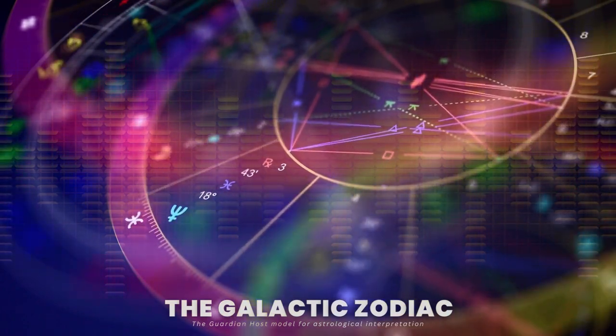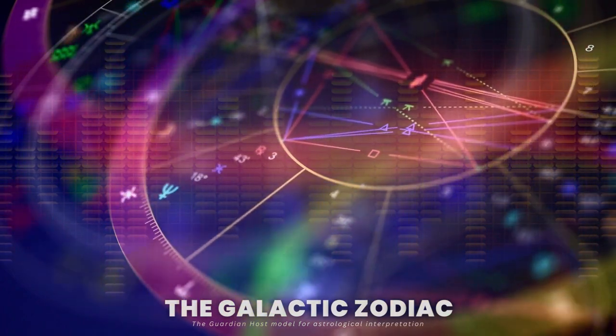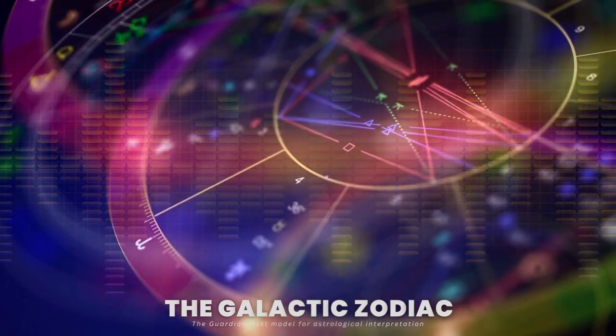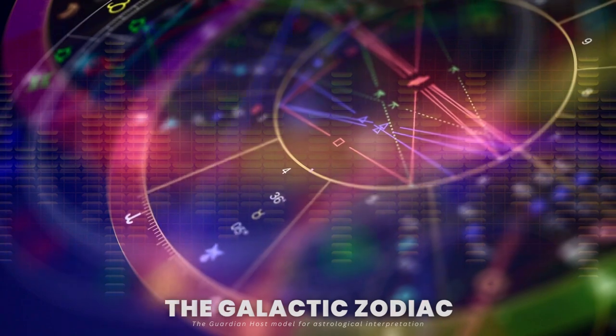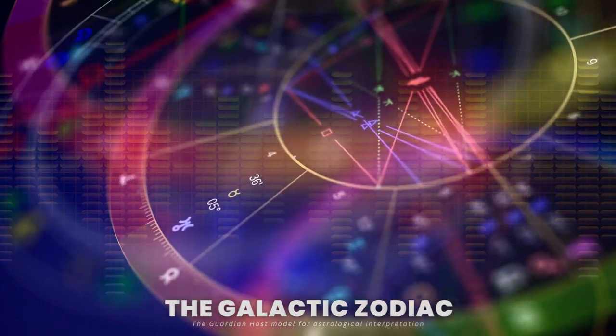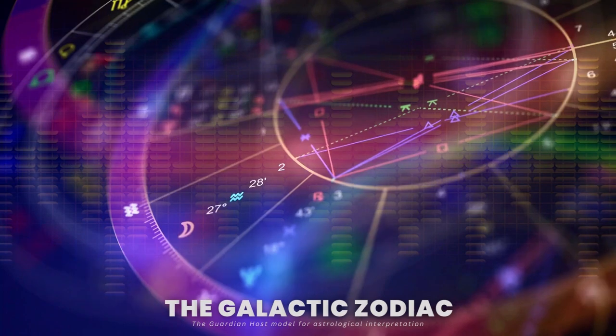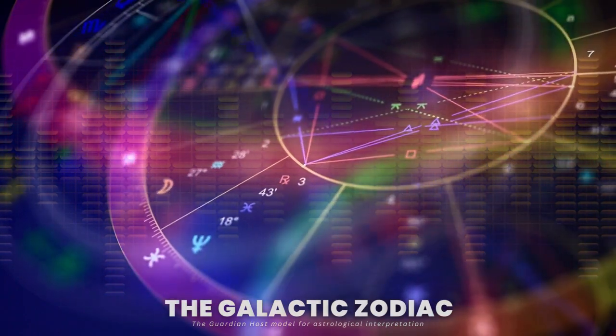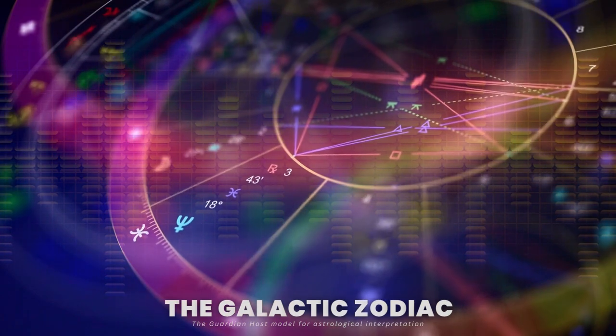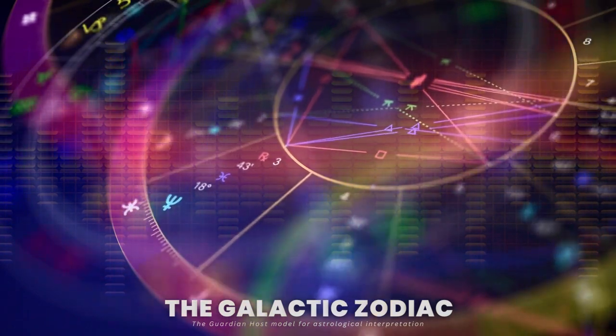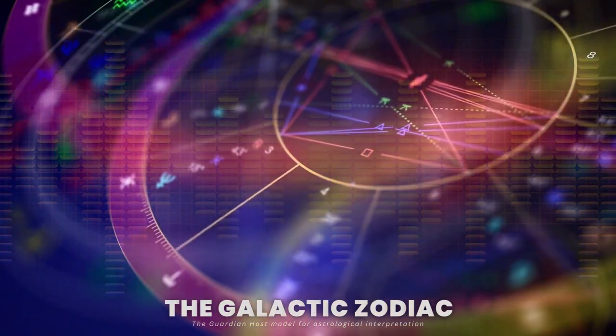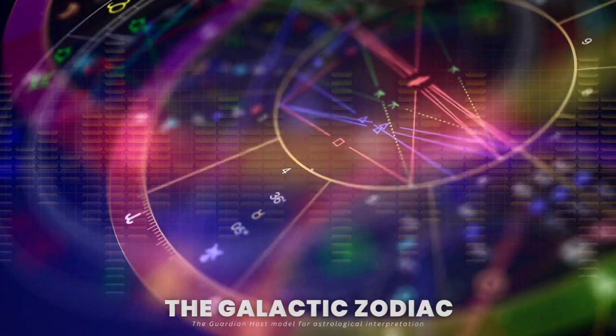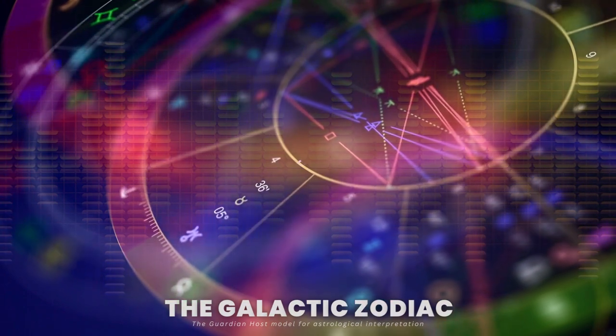These archetypes are all meant to be experienced and integrated. The galactic zodiac introduces a thirteenth sign into the mix, which many may know as Ophiuchus. This represents the unification process itself. Each sign of the galactic zodiac represents a different facet of spiritual initiation and integration in order to achieve a state of Christic perfection.